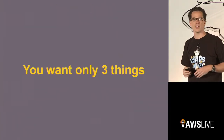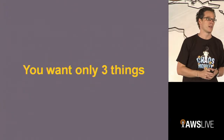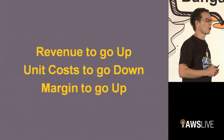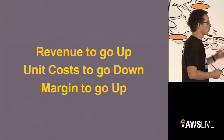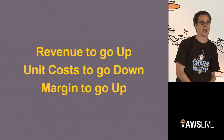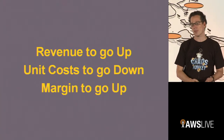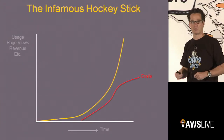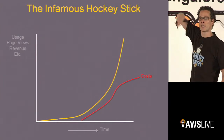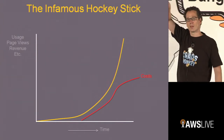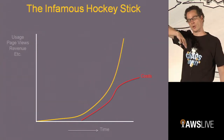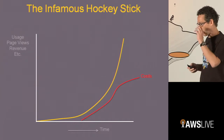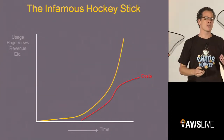So at that stage, as a startup, you only want three things. You want your revenue to go up, you want your unit cost to go down, and you want your margin to go up. So the hockey stick goes like that — incremental — and your costs are decremental, if that's the way of saying it.